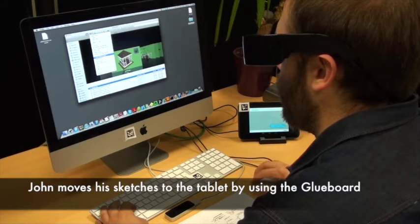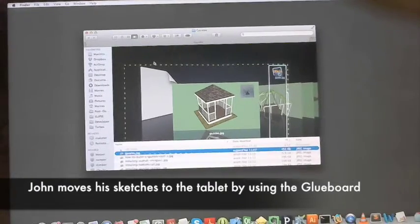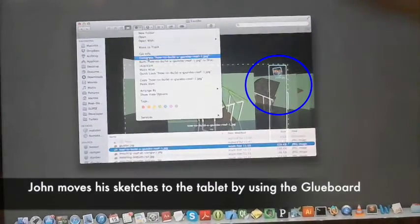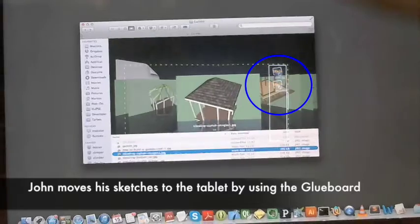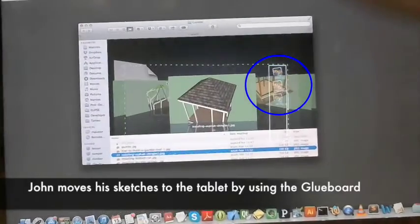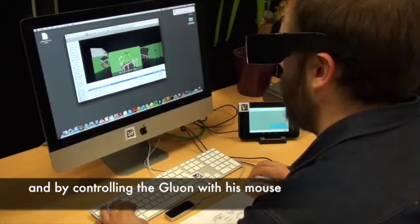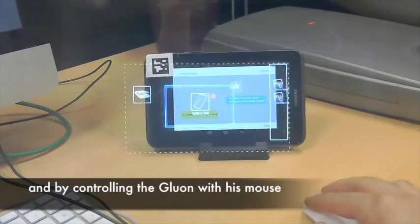Next, John transfers his presentation sketches to his tablet. He first copies his sketches to the glue board. Controlling the Gluon with his mouse, he moves the images from the glue board onto the tablet.